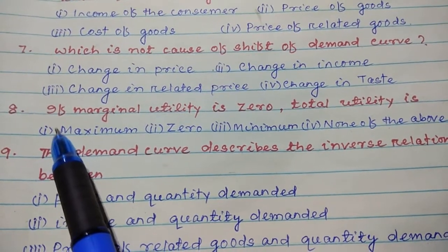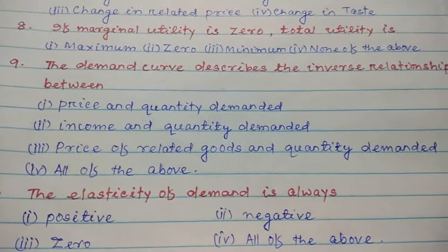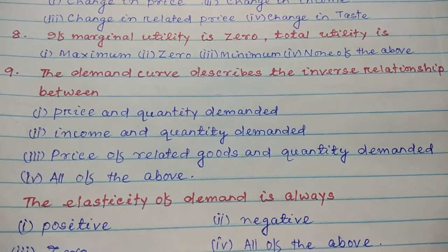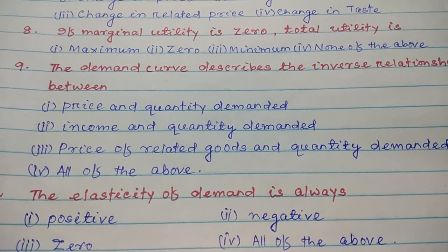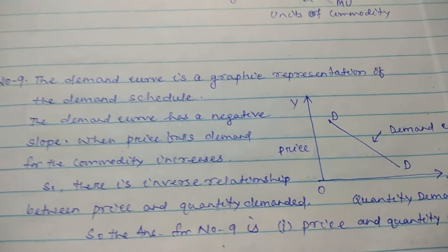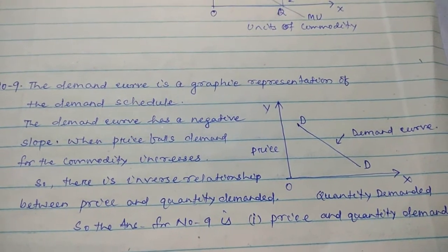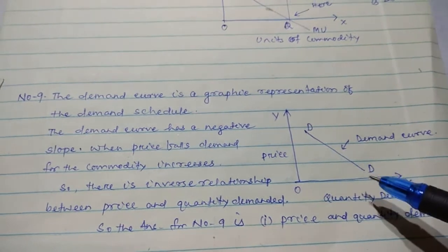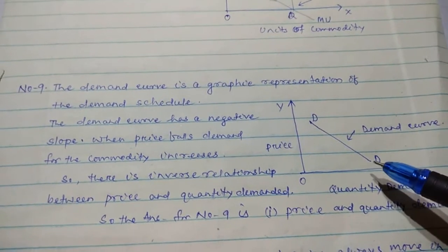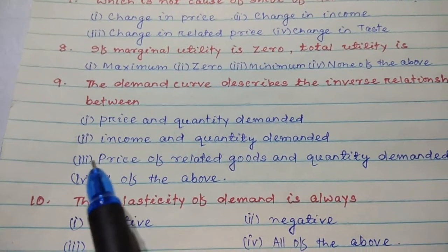Number nine: The demand curve describes the inverse relationship between I. Price and quantity demanded, II. Income and quantity demanded, III. Price of related goods and quantity demanded, IV. All of the above. We see in the diagram that the demand curve is a graphic representation of the demand schedule. The demand curve has a negative slope — when price falls, demand for the commodity increases. So there is an inverse relationship between price and quantity demanded; the demand curve DD slopes downwards. So the answer for number nine is I. Price and quantity demanded.